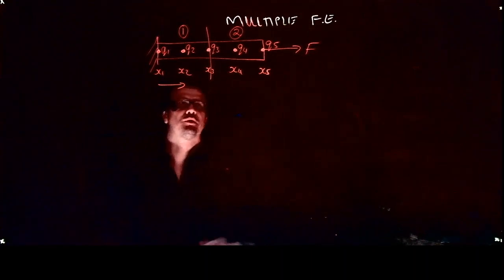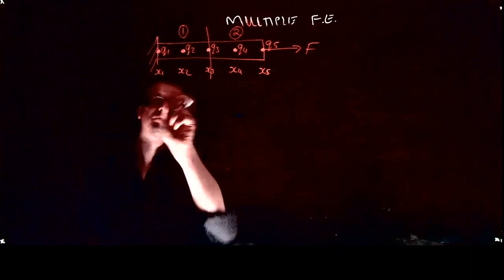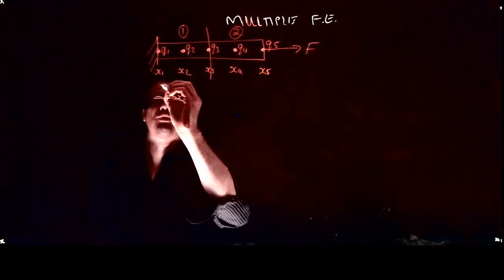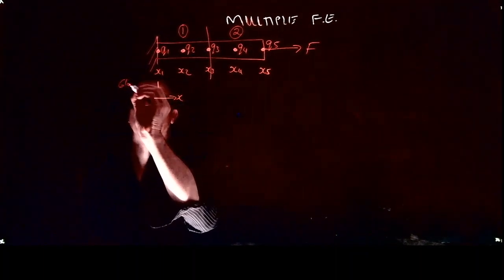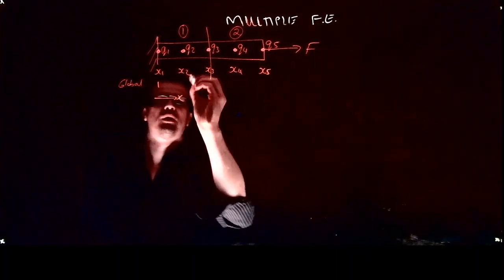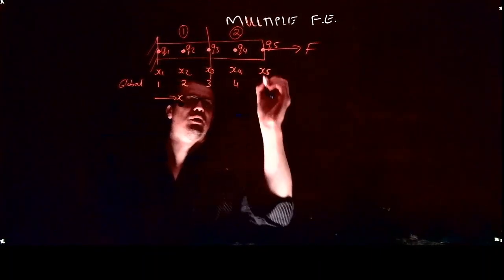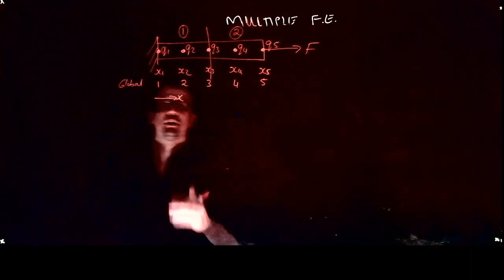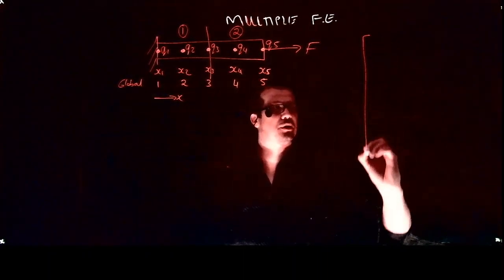This is on a global scale. What we can say globally is that this is what I will call node number one in the global system. Node number one, node number two, node number three, node number four, node number five. That's just so that I know what's going on on the global scale. What this implies is when we have a stiffness matrix, when you think about a big stiffness matrix...